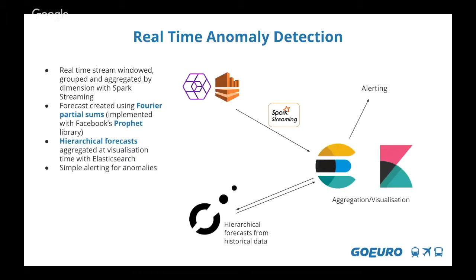Two things go to our Elasticsearch database: the real-time stream incrementing every minute, and the forecasts, which at a periodic frequency go back, pick up the historical data, and forecast forward for a day at every level. That gave us a good system — you can even see what kind of spike we might see in the next hour. Once we built the hierarchical forecasts and hierarchical actual data, the anomaly detection alerting was just the last piece of the jigsaw puzzle, and quite easy to implement.